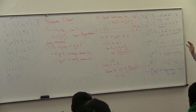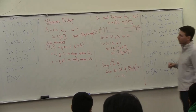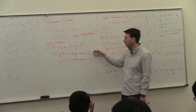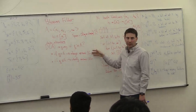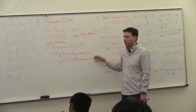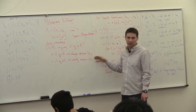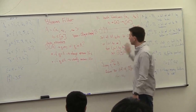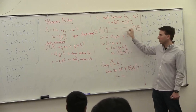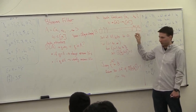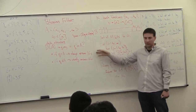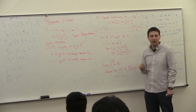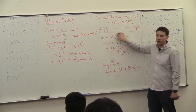So now we have this Bloom filter, which can store a set of items. It's going to always return true if the element is in the set, and usually return no if the element is not in the set — there are some false positives. But in practice this works very well. If you're really pressed for space, this is really the most compact way of storing a set with these sorts of guarantees. A lot of people are trying to tweak it one way or another and it really doesn't improve too much on this.